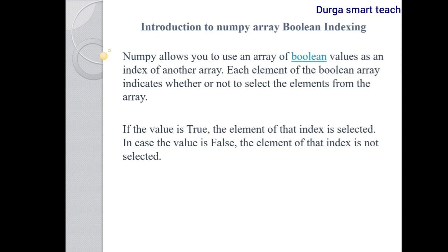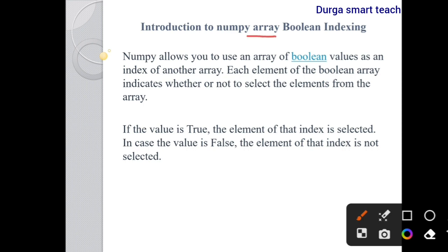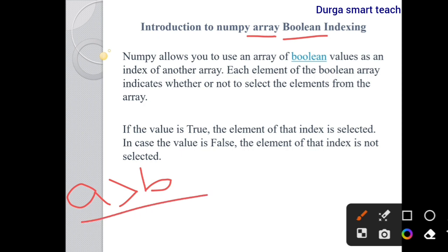So here we all know array. Array is a collection of homogeneous elements. Boolean is a data type which accepts only two possible values, that is true or false. For example, a greater than b contains only two possible values — true or false.